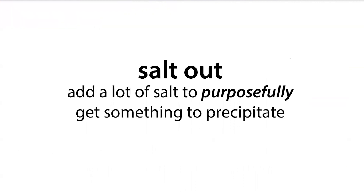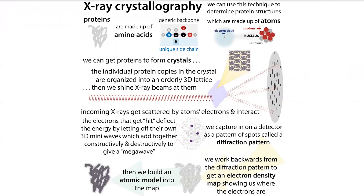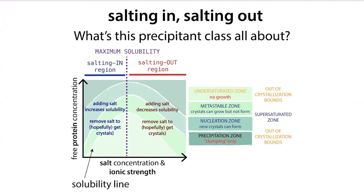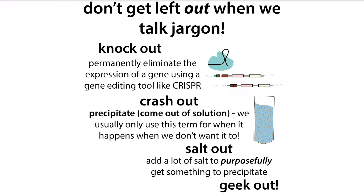Precipitation isn't always bad — sometimes we want things to precipitate. We can use the term salt out, where we add a lot of salt on purpose to get something to precipitate. Proteins tend to precipitate at both low and high salt, and we take advantage of this in crystallography, where we want proteins to come out of solution in an orderly fashion — forming nice orderly arrays called crystals rather than just aggregating. Adding a bunch of salt can promote this crystallization. So crashing out is unintended and bad; salting out is intentional.